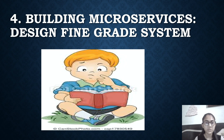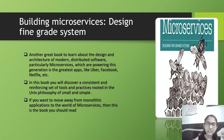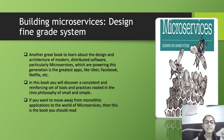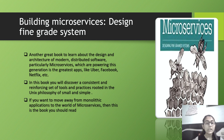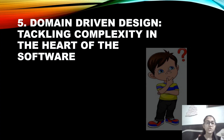The fourth on the list is 'Building Microservices: Designing Fine-Grained Systems.' This is another great book to learn about the design and architecture of modern distributed software, particularly microservices, which are empowering the greatest apps like Uber, Facebook, Netflix, etc. In this book you will also discover a consistent and reinforcing set of tools and practices rooted in the unique philosophy of small and simple. If you want to move away from monolithic applications to the world of microservices, then this book is a must-read.